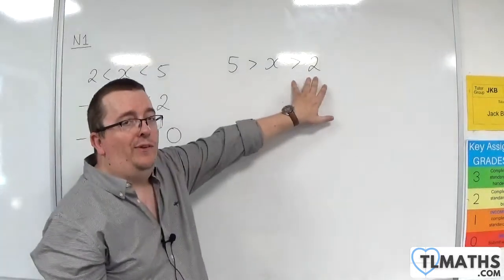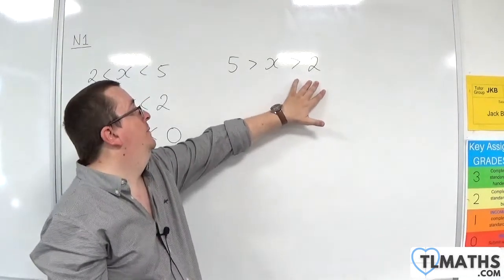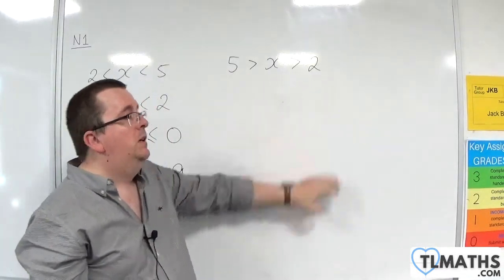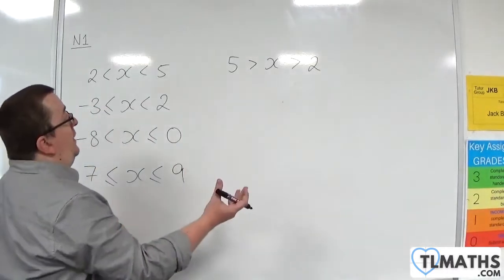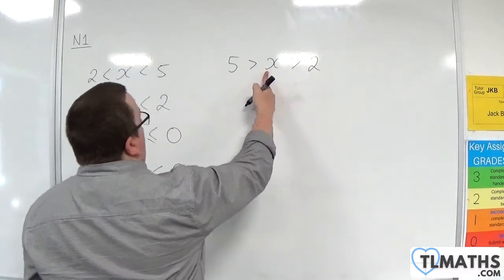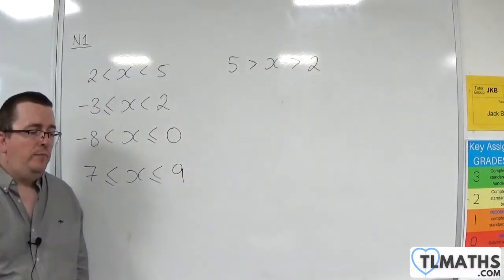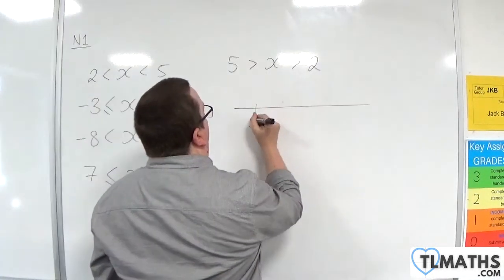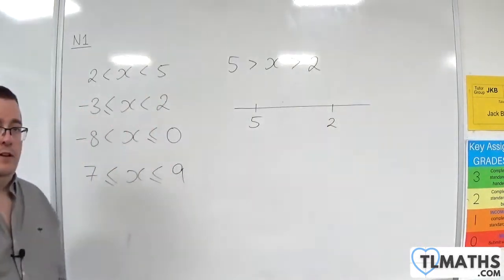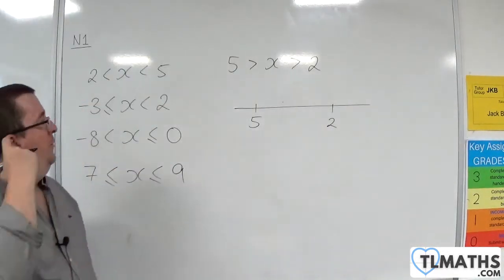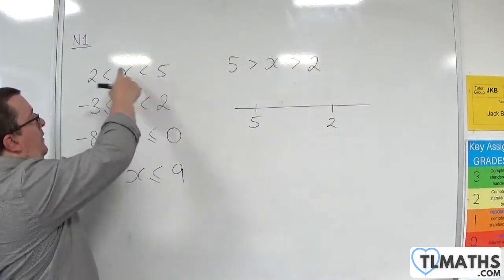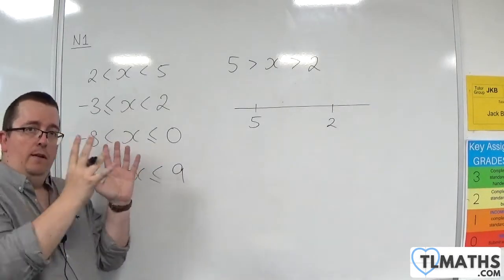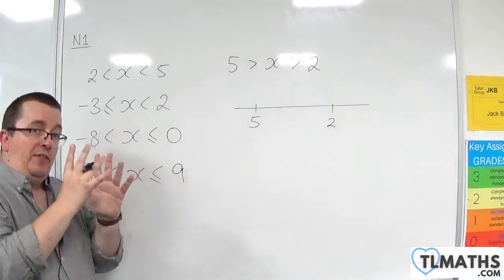Now, by rights, there is really nothing wrong with this statement. 5 is certainly greater than 2, and essentially it says the same thing, right? x is greater than 2, and x is less than 5. However, we don't write a number line where 5 is to the left of 2. So when you write down an inequality, you should always have the numbers written in order, as they would appear on a number line.